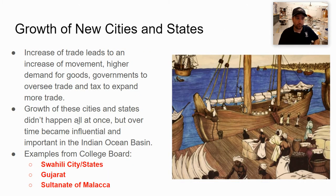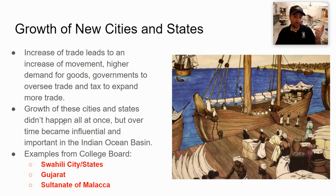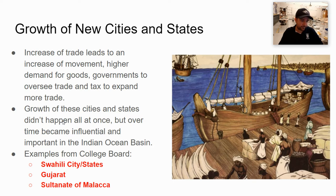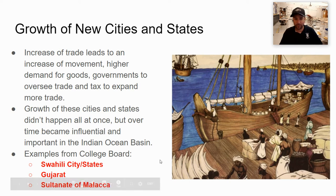Increased trade fosters the growth of new cities and states. Just like with the Silk Road, increased volume of trade leads to governments that need to oversee, protect, and tax the trade. The taxing of trade leads to those governments becoming more powerful and building empires that expand their influence over larger geographical areas. Some examples from the College Board are the Swahili city-states, Gujarat, and the Sultanate of Malacca — ones we haven't talked about in great detail yet.